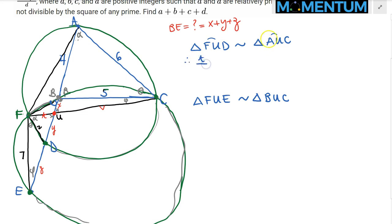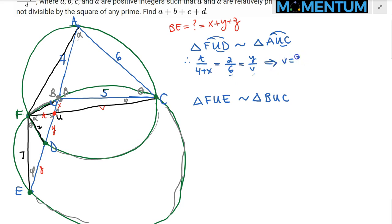Applying the first similarity FUD ~ AUC: FU/AU = FD/AC = UD/UC, giving t/(4+x) = 2/6 = y/v. From the ratio 2/6 = 1/3, looking at the second and third components we get v = 3y. From the first and second ratios: 6t = 2(4+x), which simplifies to x = 3t − 4.